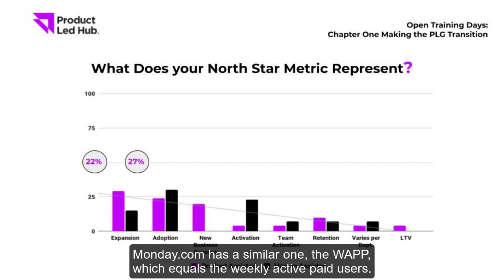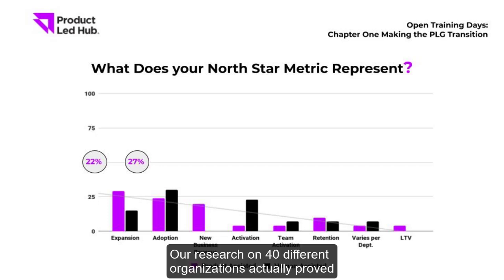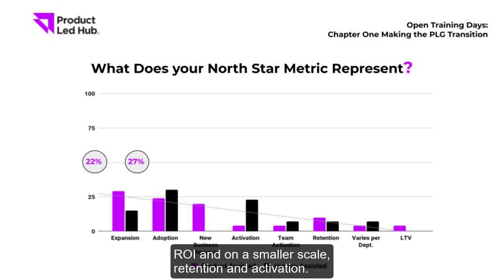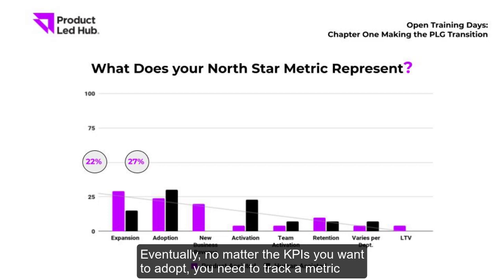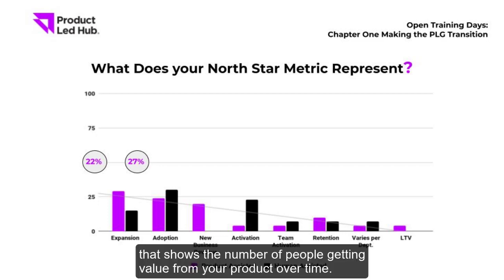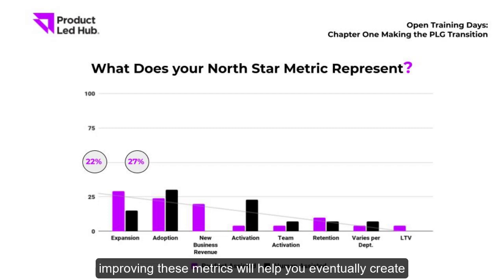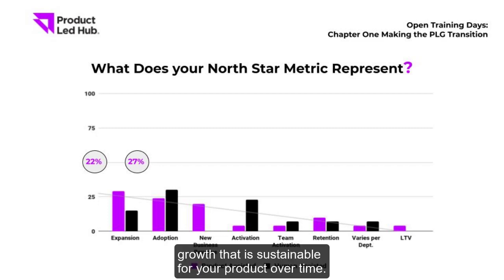Monday.com has a similar metric called WAU — Weekly Active Users. Our research on 40 product-led organizations proved that north star metrics are focused around expansion, adoption, new business ROI, and on a smaller scale, retention and activation. No matter the KPIs you adopt, you need to track a metric that shows the number of people getting value from your product over time, correlated to better upgrades and retention.